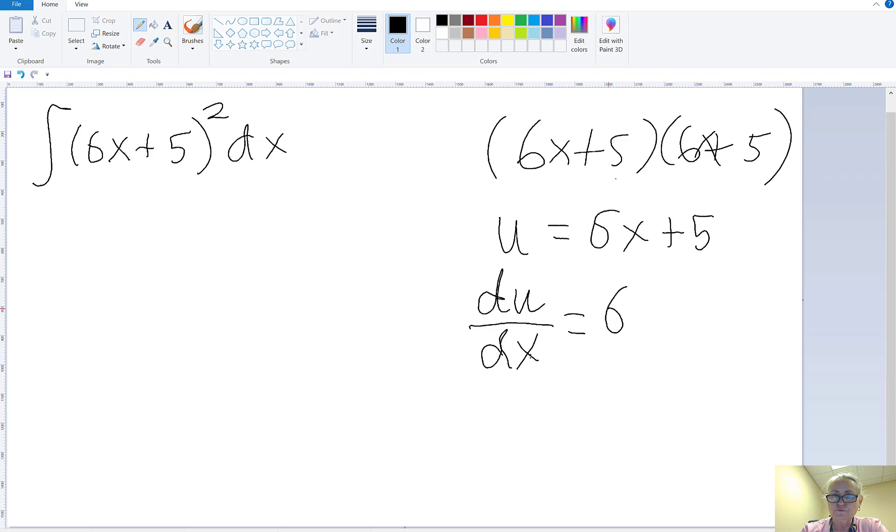And if I want to move this dx to the other side, it's like multiplying through by dx. I know that du is 6dx.